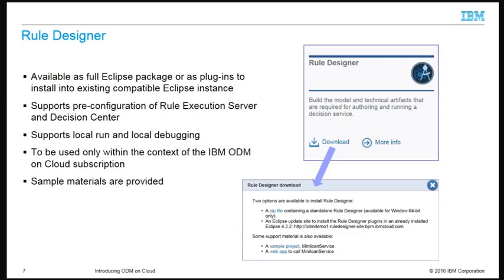You download Rule Designer from the cloud portal. If you have an existing Eclipse environment, you can install the Rule Designer plugins. Rule Designer for Cloud supports the pre-configuration of Rule Execution Server and Decision Center cloud connections. Rule Developers use Rule Designer to build the decision service model and technical artifacts. Local run configuration and debugging is also supported. Once you complete the development of a decision service, you can publish the projects to the Decision Center development environment in the cloud. You can use the downloaded Rule Designer only within the context of an ODM on Cloud subscription. The download dialog also provides some supporting samples to help you get started.